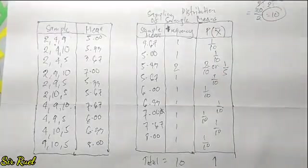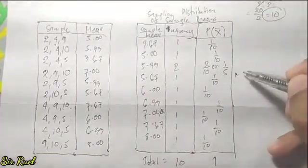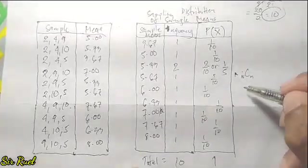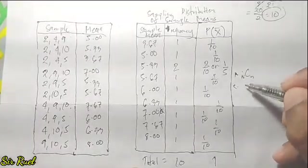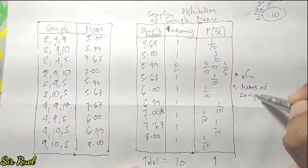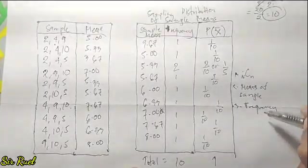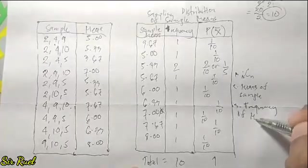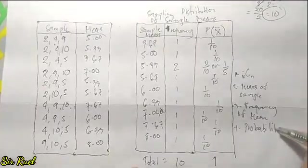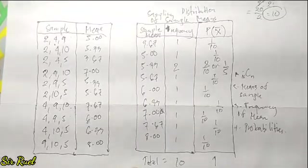To summarize the steps: first, find the number of possible samples using the combination formula. Second, compute the mean of each sample. Third, count the frequency of each mean. And last, get the probabilities. I hope you understand. If you have queries, just message me. Thank you for watching.